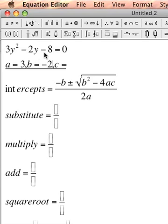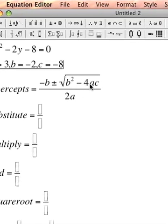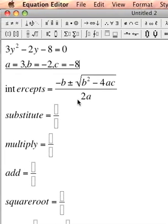And the constant c is equal to negative 8, so I'm going to make c equal to negative 8. Now I'm going to have a formula, and the formula says negative b plus and minus the square root of b squared minus 4ac divided by 2a.